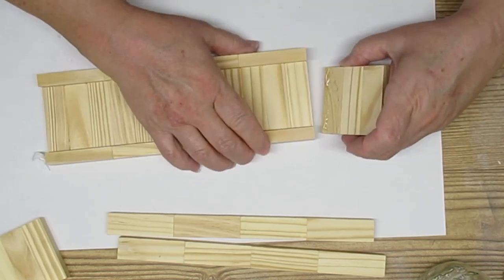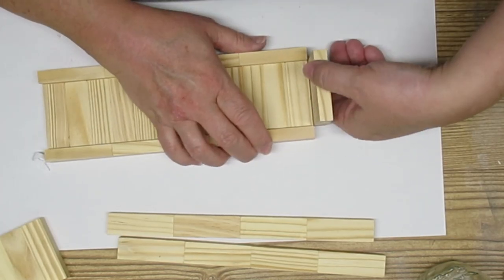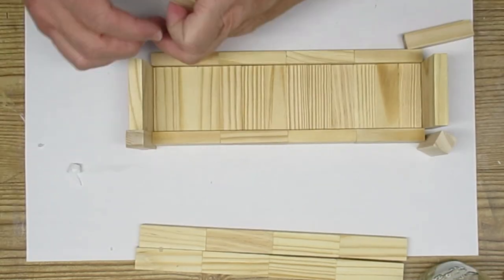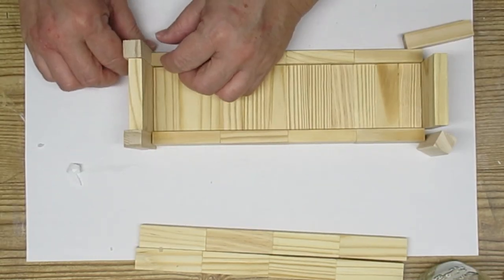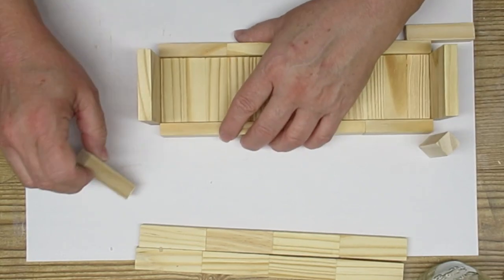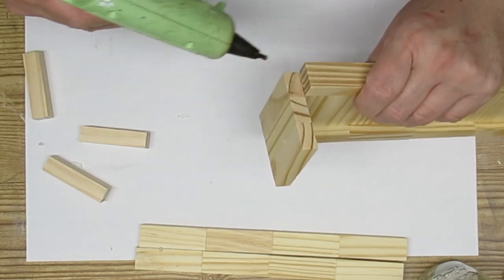Next, I'll glue the sides on and then I'll start working on the corners. So now it's very easy to just go ahead and set the corners right inside. They fit perfectly and I'm really pleased with how this is coming together.